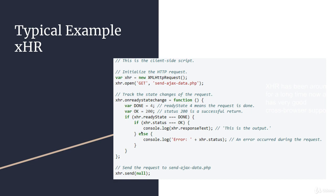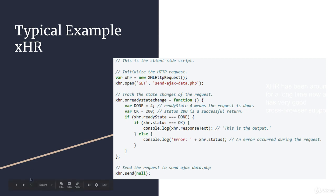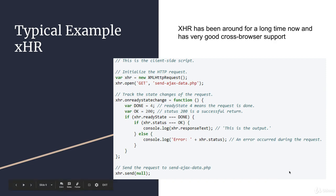A typical XHR request — we'll be showing these in more detail shortly. We initialize the HTTP request, open the page we're requesting, then send that information. In the middle we listen for the ready state, which changes depending on where you are in the steps of retrieving data. Ready state four means the request is completed; status 200 means you've successfully connected and retrieved data. If something went wrong, we can also catch those errors. The XHR has been around a long time and has very good cross-browser support.